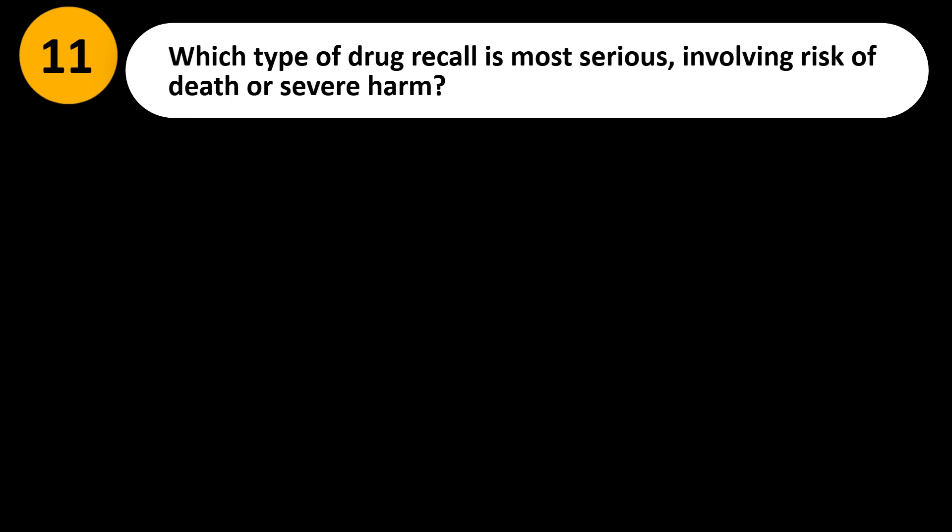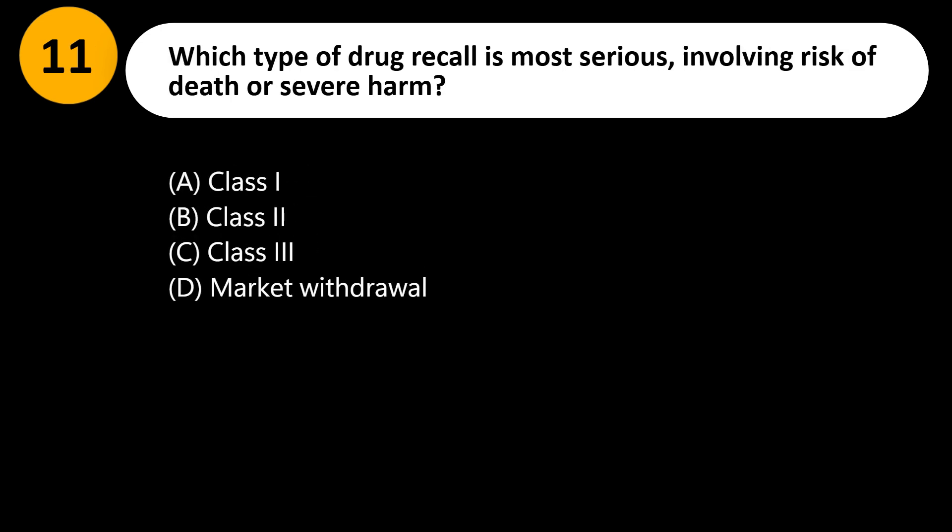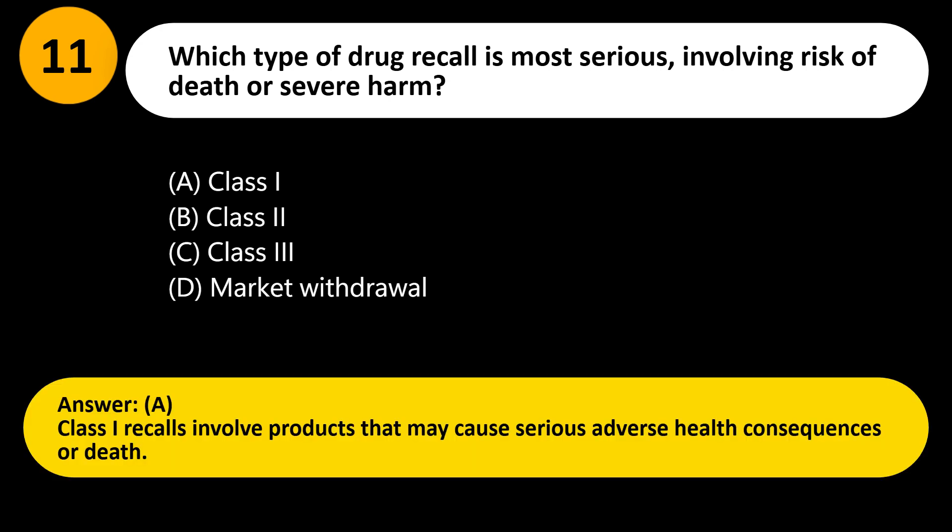Which type of drug recall is most serious, involving risk of death or severe harm? A) Class 1, B) Class 2, C) Class 3, D) Market withdrawal. Answer: A. Class 1 recalls involve products that may cause serious adverse health consequences or death.